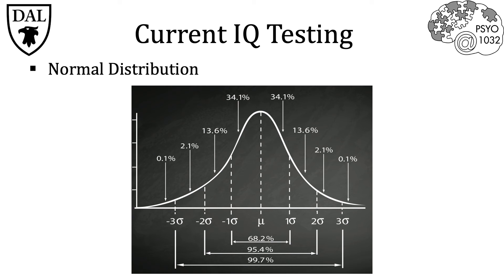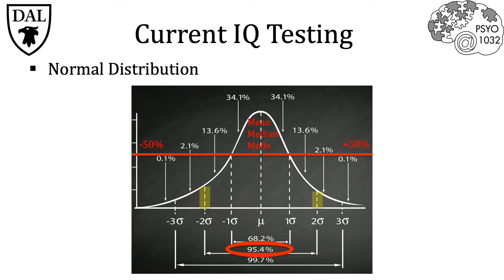A normal distribution has three main characteristics that hold true across all normally distributed population measures. First, the mean, median, and mode are all equal. Second, the distribution is symmetrical, so 50% of the data fall on either side of the center. Finally, the distribution is uniform such that the standard deviation — the measure of how spread out numbers are from the mean — is constant: one standard deviation encompasses approximately 68% of individuals, two standard deviations encompass approximately 95%, and three standard deviations encompass approximately 99.7% of individuals.